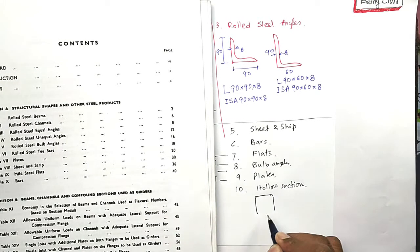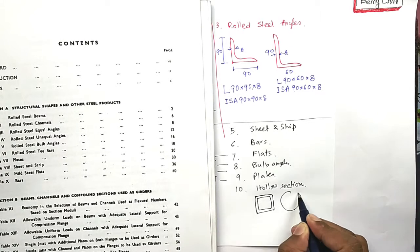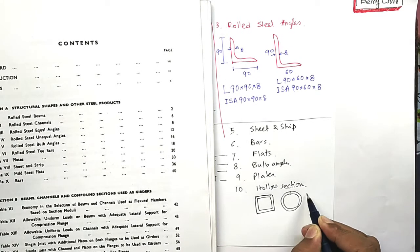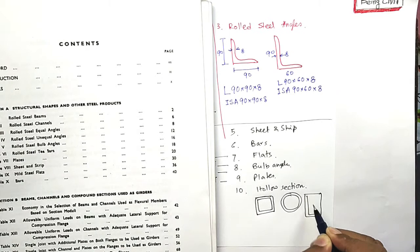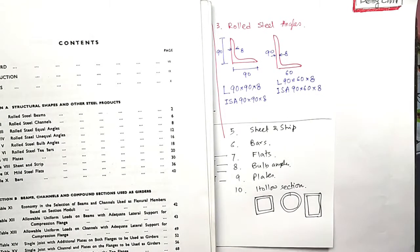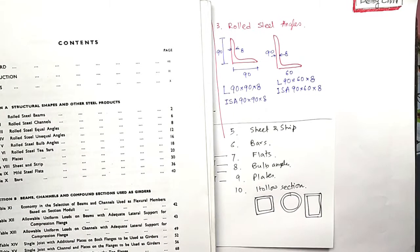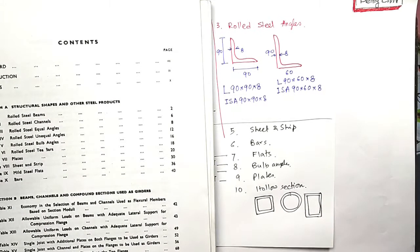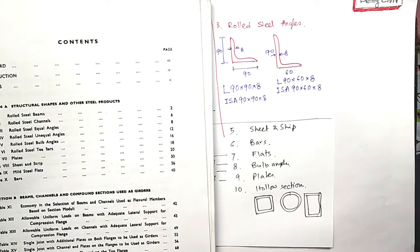Hollow section looks like this. This is a square hollow section, circular hollow section, rectangular hollow section, like this. The properties of these hollow sections are not in SP 6. We will go into details of this hollow section later in this series and also tell you what code you should use for hollow section.